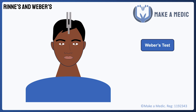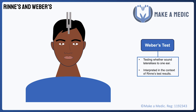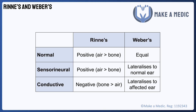Weber's test involves applying the tuning fork to the forehead and seeing whether the sound is heard equally, or if it lateralises to an ear. If the sound lateralises to an ear, that does not necessarily mean it's the good ear, which is why the results have to be interpreted in the context of Rinne's test. In conductive hearing loss, there is actually a relative improvement in bone conduction on the affected side, which means that the sound from Weber's test would be heard louder in the bad ear. In summary, a positive normal Rinne's test, where air conduction is better than bone conduction, could mean the ear is healthy or that there is sensorineural hearing loss, in which case Weber's test will lateralise to the healthy ear. A negative abnormal Rinne's test, where air conduction is worse than bone conduction, would suggest conductive hearing loss, which is confirmed by Weber's test lateralising to the affected ear due to the relative improvement in bone conduction.